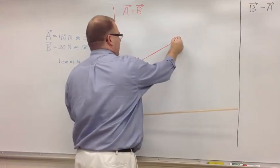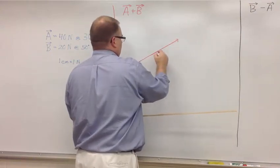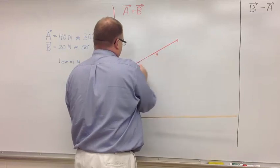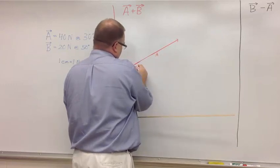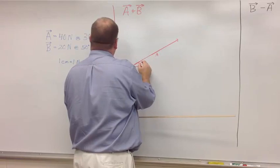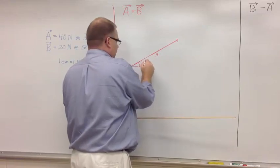I'm going to put an arrow on the end, label it vector A, and draw my angle. 30 degrees.